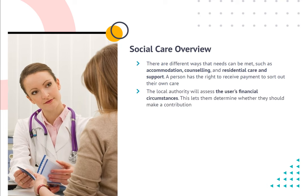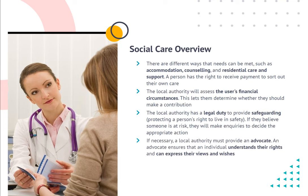There are different ways that needs can be met, such as accommodation, counselling, and residential care and support. A person has the right to receive payment to sort out their own care. The local authority will assess the user's financial circumstances to determine whether they should make a contribution. The local authority has a legal duty to provide safeguarding, protecting a person's right to live in safety. If they believe someone is at risk, they will make enquiries to decide the appropriate action. If necessary, a local authority must provide an advocate. An advocate ensures that an individual understands their rights and can express their views and wishes.